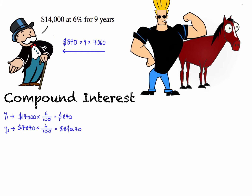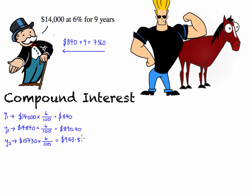Let's do this one more time. We add that to our principal and we're going to have $15,730. So now we owe $15,730, and we're going to again times that by 6%. $15,730.40 times 6% is $943.82.